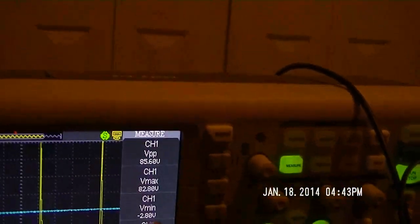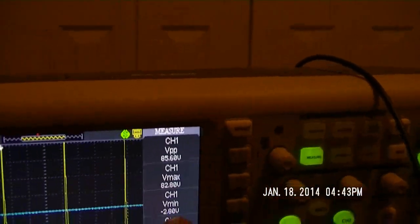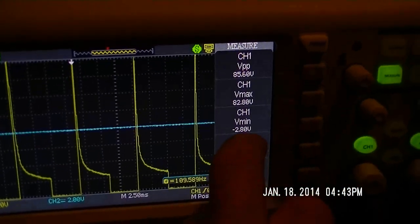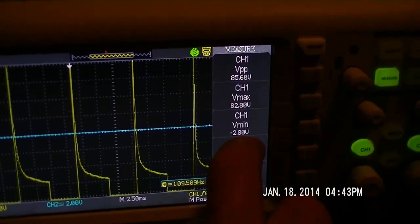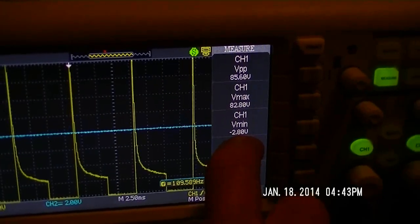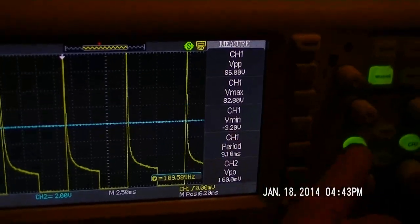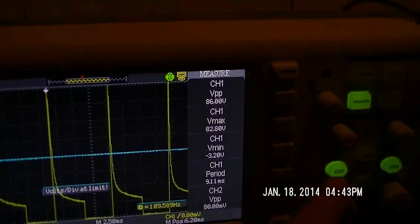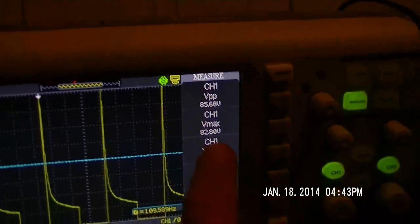But look at how the minimum voltage. Now this is supposed to be an AC waveform, but how come I'm only negative 2.8 volts, negative 3, and look at the positive voltage.